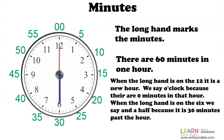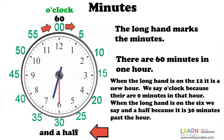When the long hand is on the 12, it is a new hour and we say o'clock, because there are zero minutes in that hour. And when the long hand is on the six, we say half past because it is 30 minutes past the hour or half of an hour.